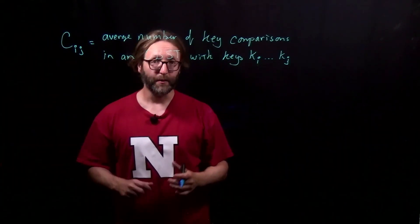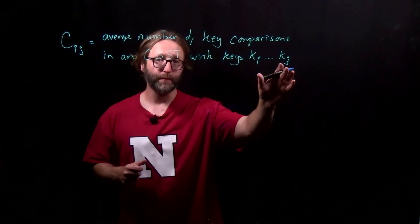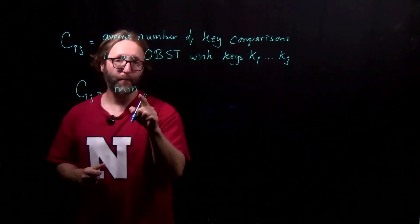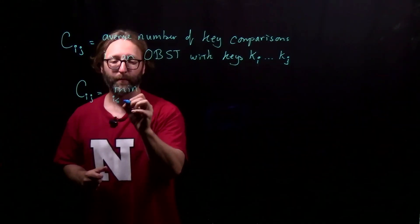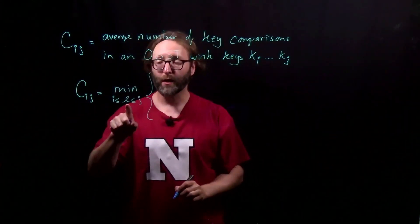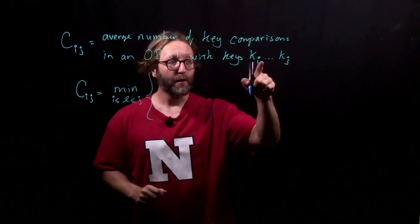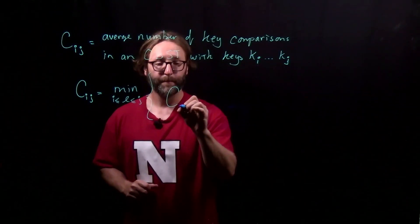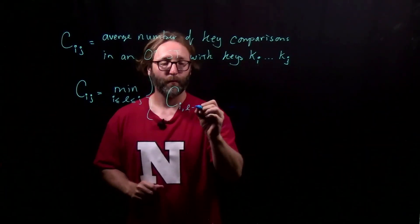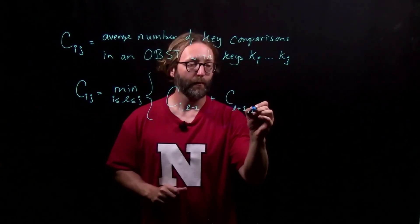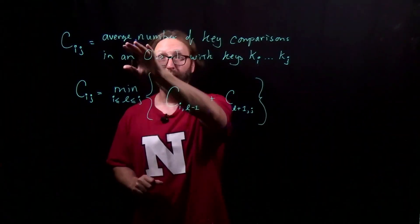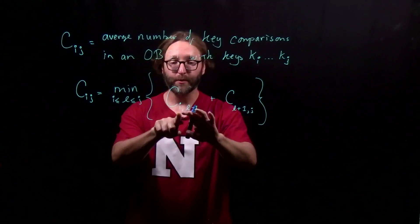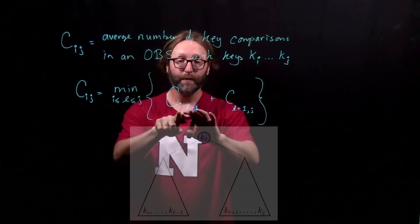As we saw last time, we could use any one of these keys as our root, so we need to consider all of those possibilities. Remember, we're going to be taking the minimum. We'll run l from i up to j to consider using each one as our root. The cost is going to be the average number of key comparisons in an optimal binary search tree using keys i up to but not including key l. This is the left subtree.